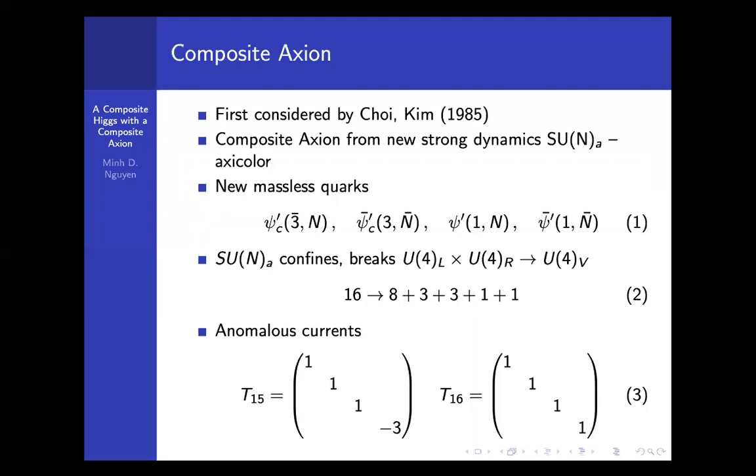I'm going to review composite axion first. This is first considered by Choi Kim a long ago, 1985. In this original model, they introduced a new dynamics called axi-color, the SU(Na).